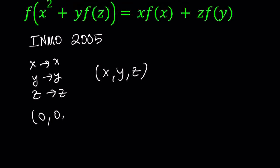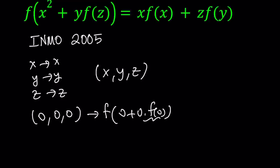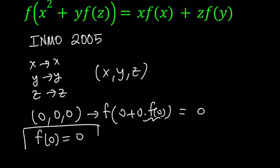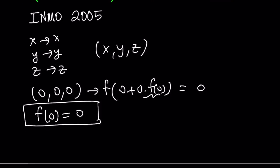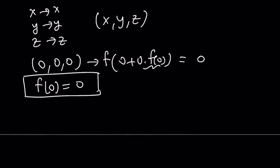(0, 0, 0) basically means replace x with 0, y with 0, and z with 0. A lot of times this is something you should try first. On the left-hand side, inside the parentheses everything will be 0. Even though I don't know f of 0, I'm going to get f of 0 plus 0 times f of 0, which becomes 0. So that's kind of nice — I get 0 on both sides. This gives us f of 0 equals 0, which is super important.